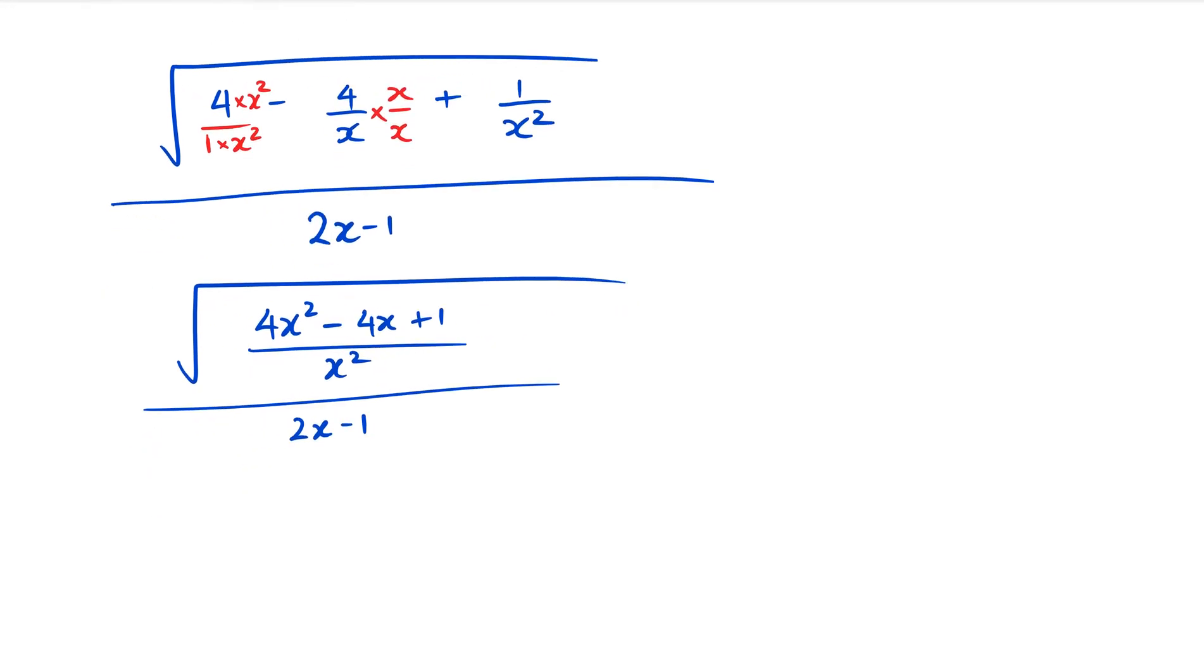The next point is looking at that 4x² - 4x + 1 and seeing that actually it's a perfect square. Normally the way they give these questions, if they give you a square root symbol, that means something in there should be able to be square rooted. If you recognize the numbers, you can see that 4x² - 4x + 1 you can actually factorize.